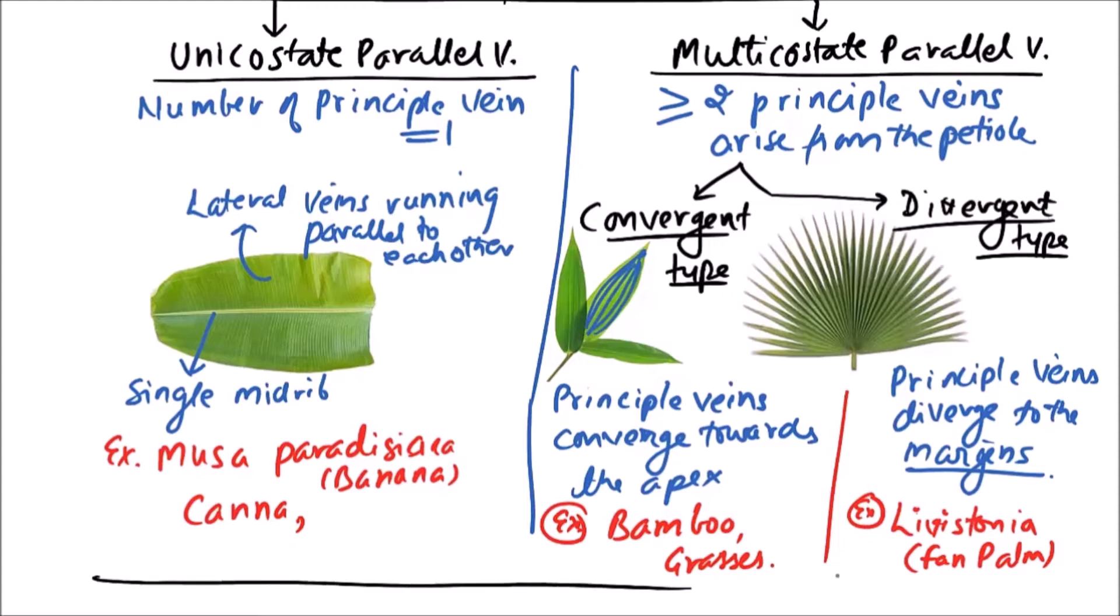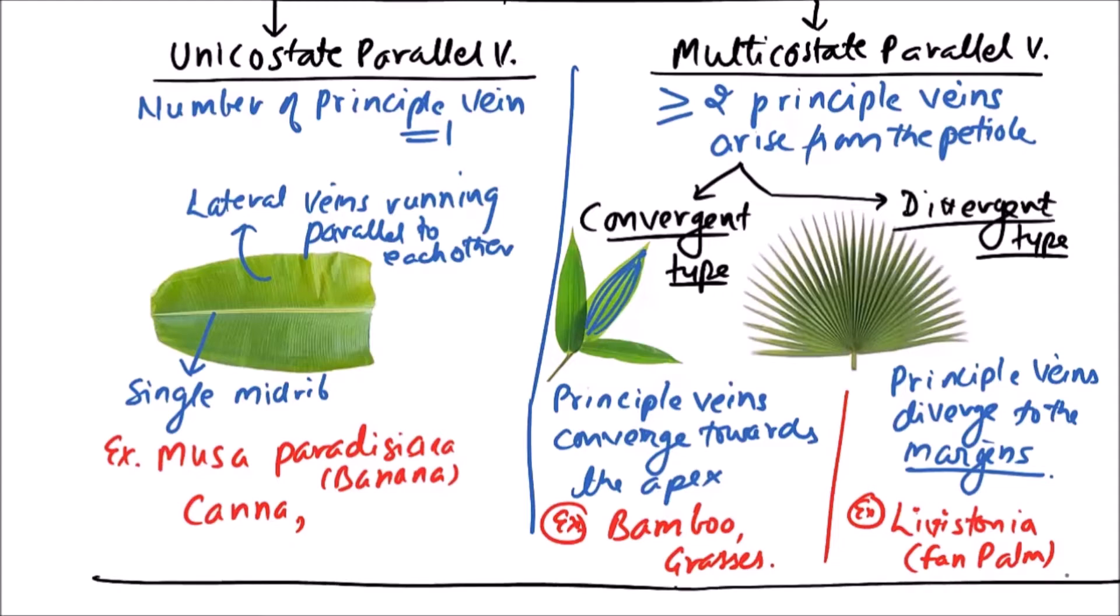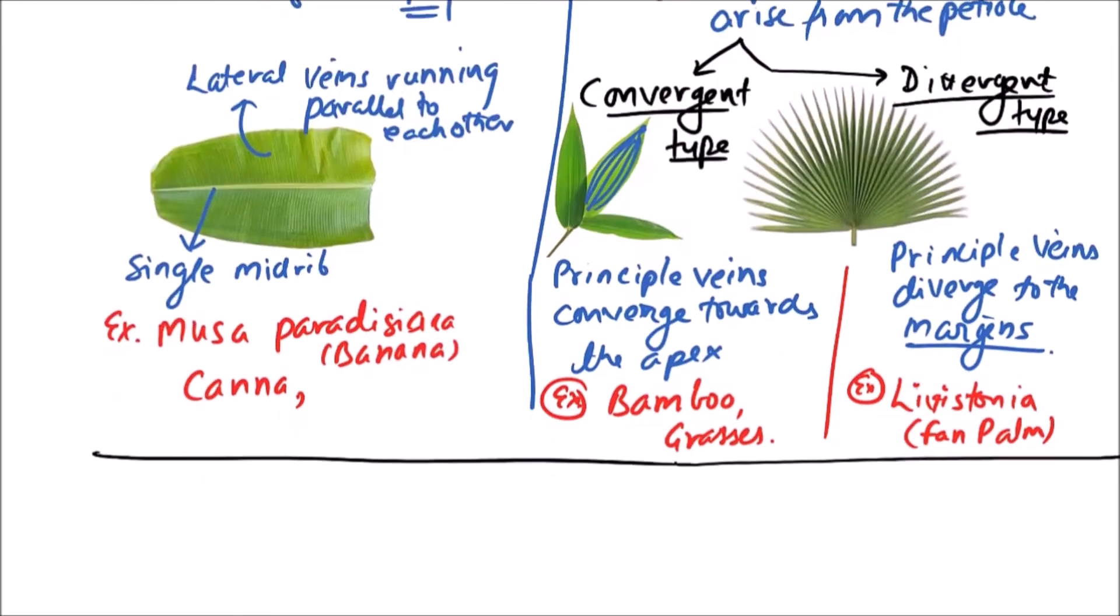These are the types of parallel venations. Now, the next type of venation is furcate venation.